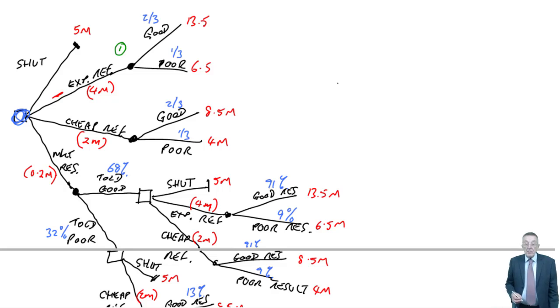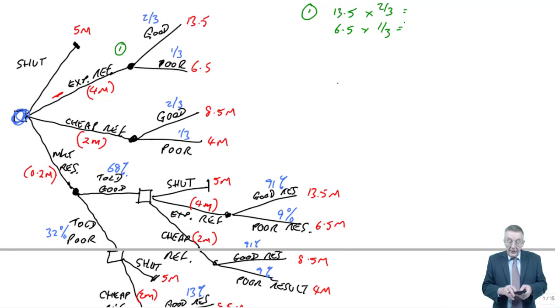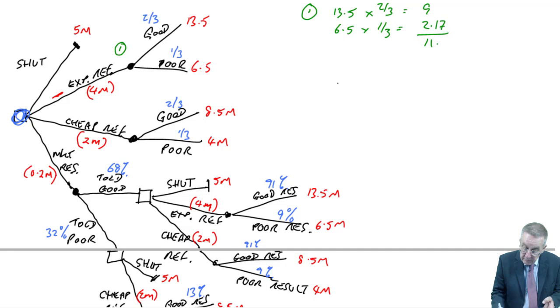So, point one. Remember, at point one, we've paid out four million. But what will we get? I'll show my workings. We'll either get thirteen point five million or we'll get six point five million. We know the probabilities as a two thirds probability of getting thirteen and a half, a third probability of getting six and a half. And so, we'll remove the uncertainty, we'll replace it with the expected value. So, it's always multiplied by the probabilities and add up. So, thirteen point five times two thirds is nine.